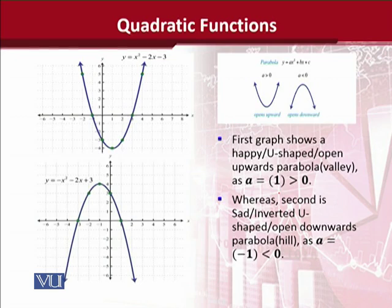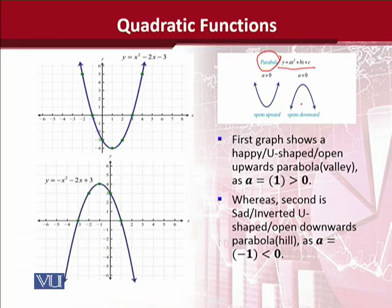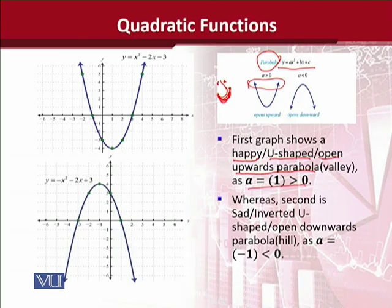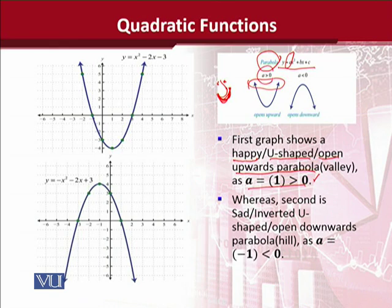Now we come to the extensive diagrams of the parabola. The standard form of a quadratic equation gives rise to a parabola that can be in either shape. The first graph is called a happy parabola, or U-shaped parabola, or open-upwards parabola — because it is open upwards, it has a U-shape, and it looks like a happy smiley face. The mathematical condition for this is the positivity of the coefficient of x squared. The coefficient a in the standard form must be positive — greater than zero — and then we shall have the happy or U-shaped parabola.